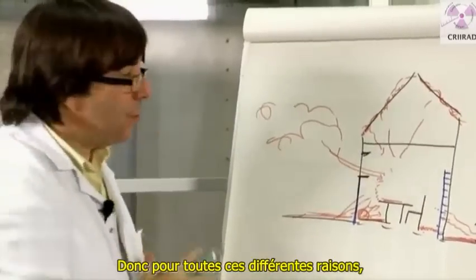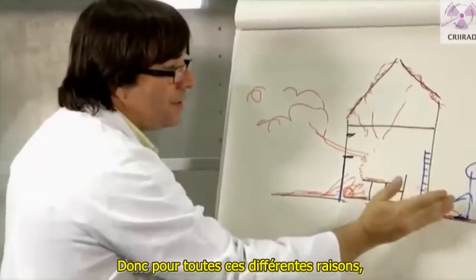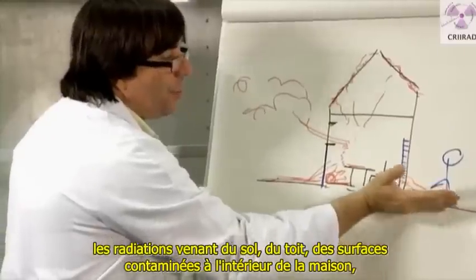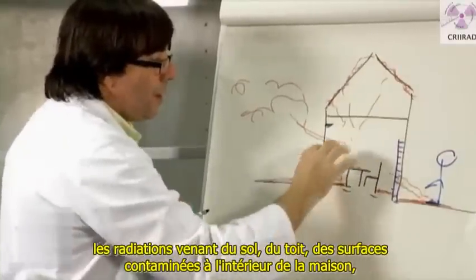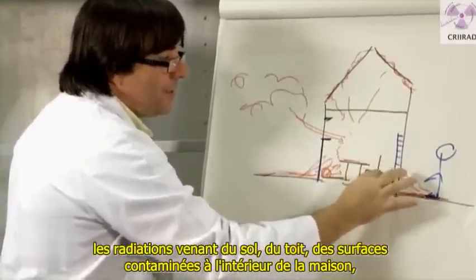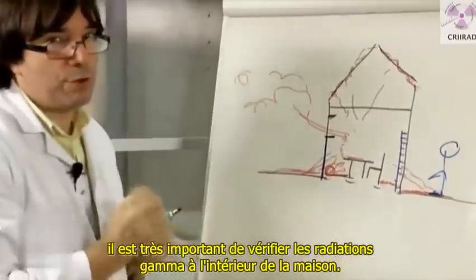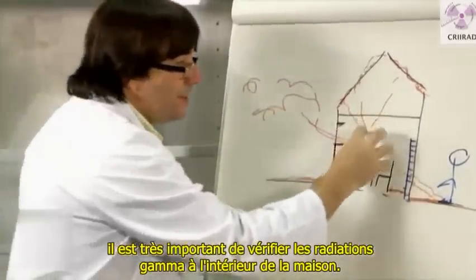So for all those different reasons — radiation coming from the soil, from the roof, from contaminated surfaces inside your house — it's very important to check the gamma radiation inside the house.